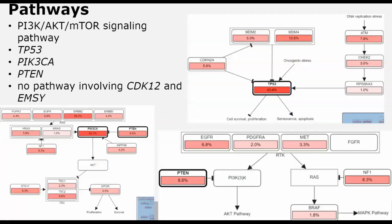Here are some of the pathways the portal provided for how the genes in my query interact with one another. The genes included in my query have a thick border around them. For TP53, DNA stress and oncogenic stress were shown to change its function from a tumor suppressor to a tumor promoter, promoting cell survival and proliferation. For PIK3CA and P10, they often interact with one another to signal the PI3K signaling pathway. There was no pathway provided by the portal involving CDK12 and MZ, but based on prior data it was evident these genes play a role in a breast cancer liver metastasis pathway.